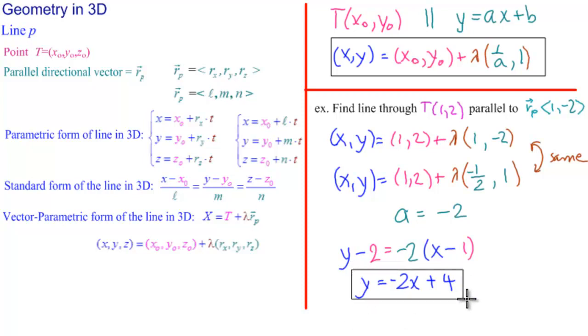So supposedly these two are the equation of the same line that passes through 1, 2 and is parallel to this directional vector. Let's see that.